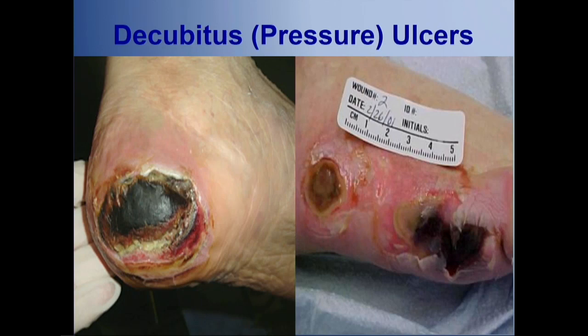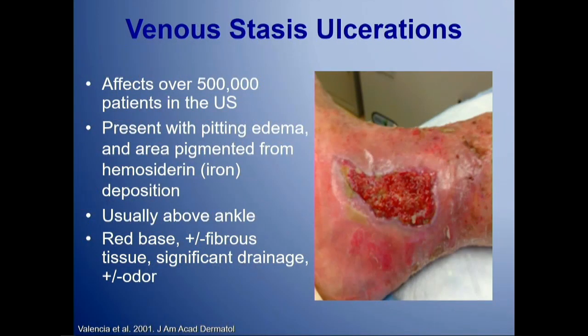Decubitus or pressure ulcers are a very significant problem within our institutions. These have to be understood as a preventable problem. If you see your patients and ensure proper offloading, these things are preventable. Sadly, we see a lot of outside facilities — nursing facilities and long-term care facilities — that don't focus on this because so much emphasis is placed on managing other bodily wounds. Efficient offloading is critical in order to prevent these types of problems.